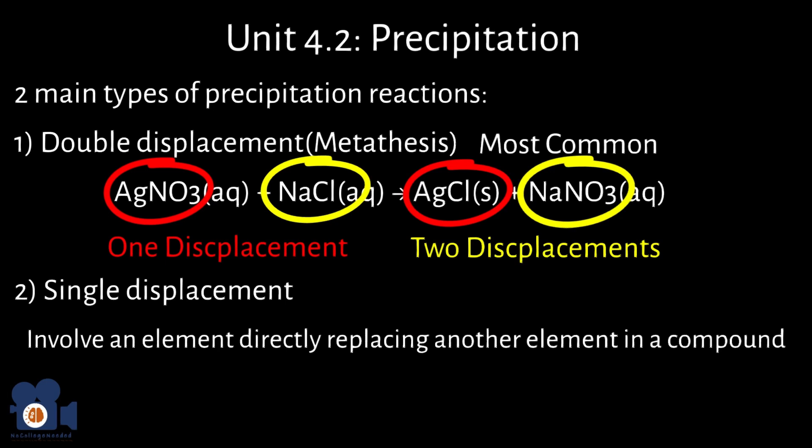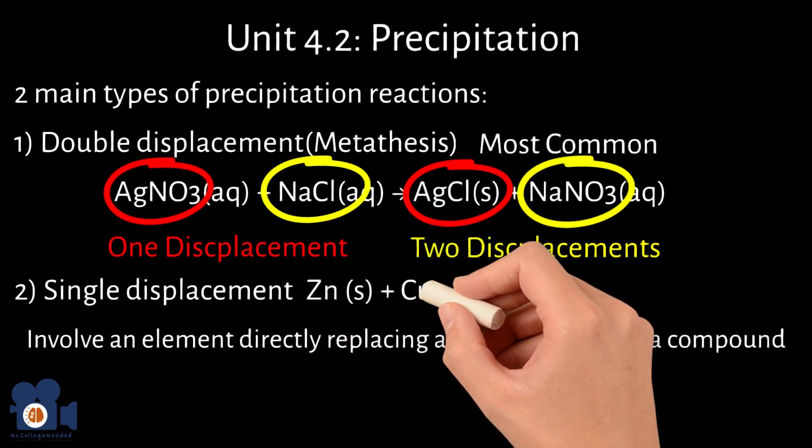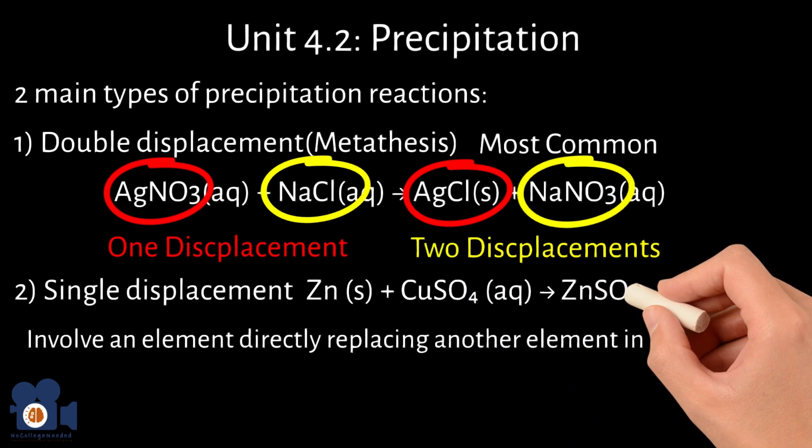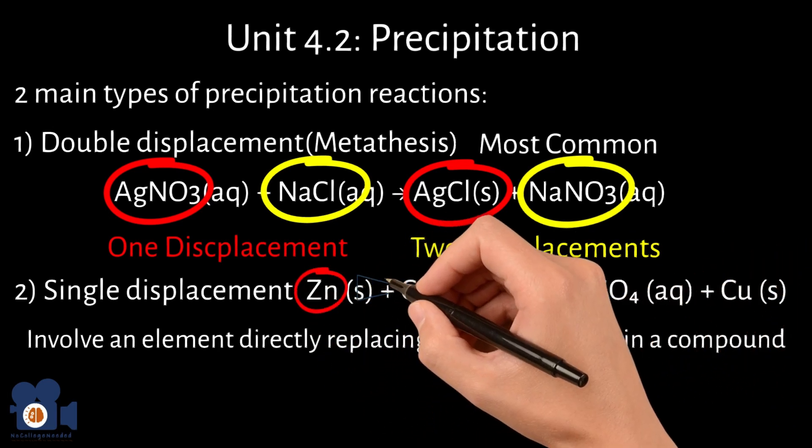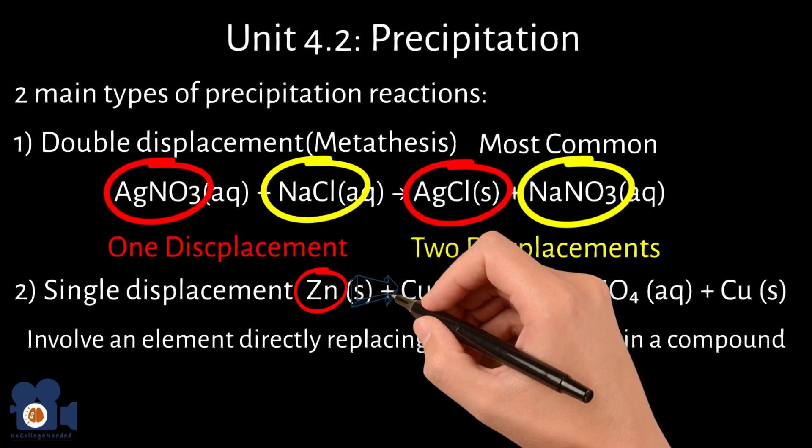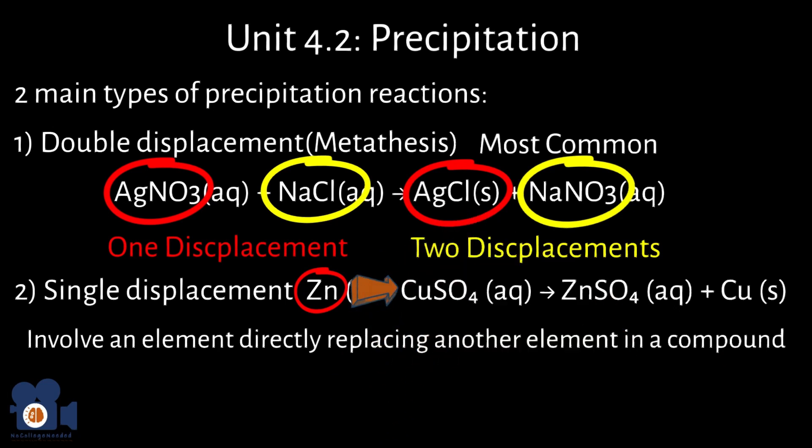For example, in the following reaction, Zn plus CuSO4 going to ZnSO4 plus Cu. Zinc, Zn, is reacting with the copper sulfate, CuSO4, and replaces copper, Cu, to form zinc sulfate, ZnSO4, and the copper metal precipitate.